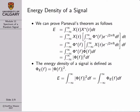Parseval's theorem is reasonably straightforward to prove. Total energy is the integral of the magnitude squared of x(t), which is x(t) multiplied by its conjugate. In the next line we substitute the inverse Fourier transform for the conjugate of x(t): the conjugate of x(t) is represented by the inverse Fourier transform of its conjugated spectrum. Since we're using the conjugate, rather than e^(j2πft), we get e^(−j2πft).